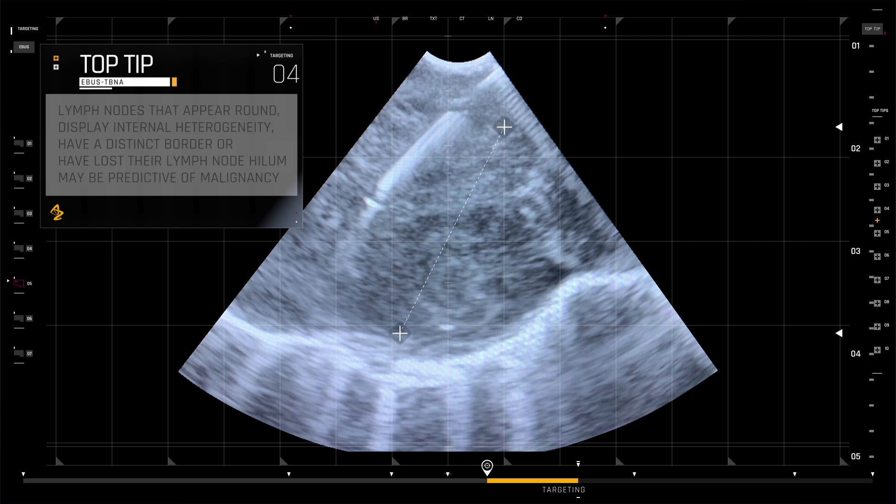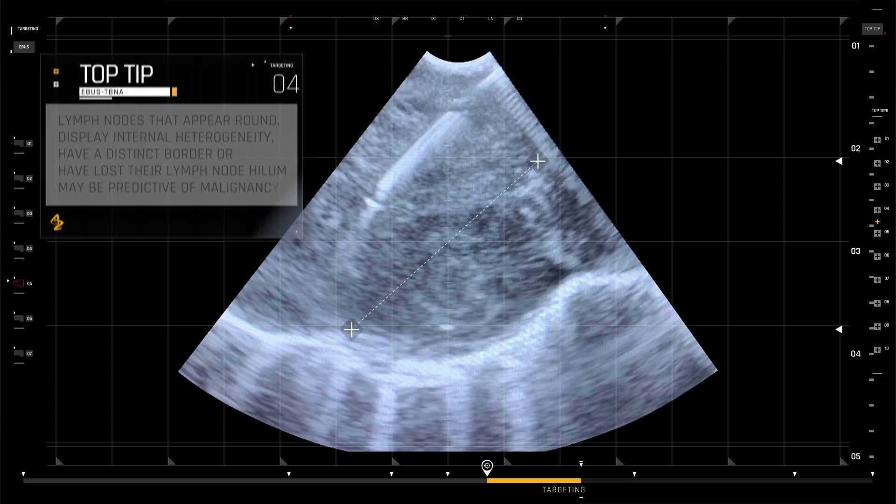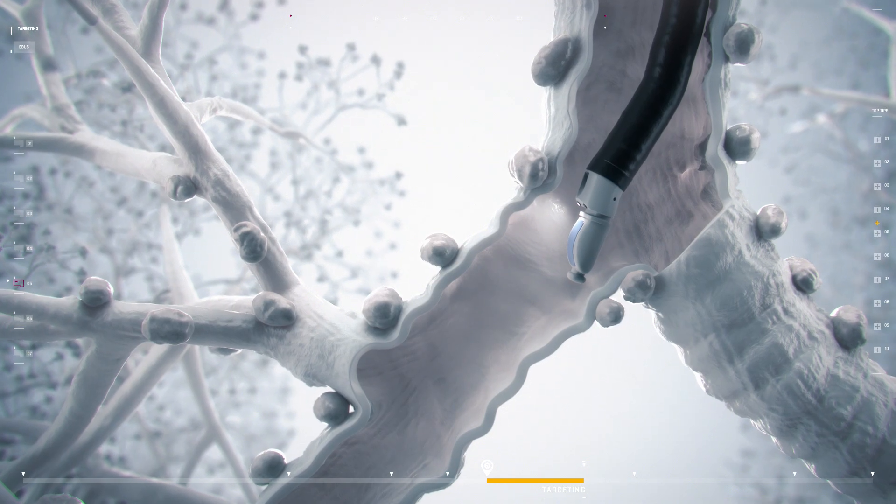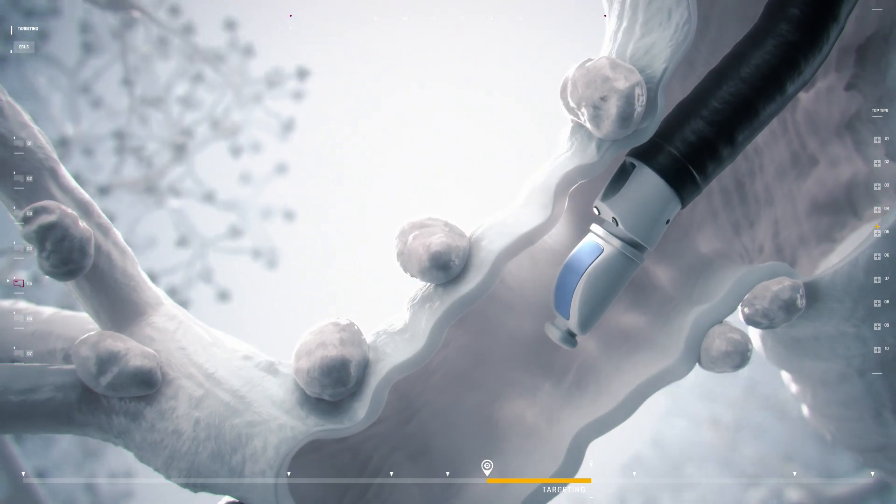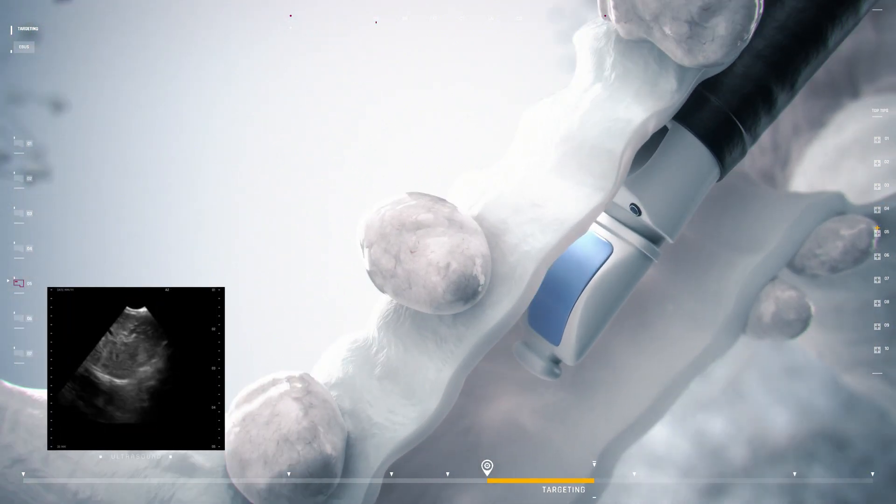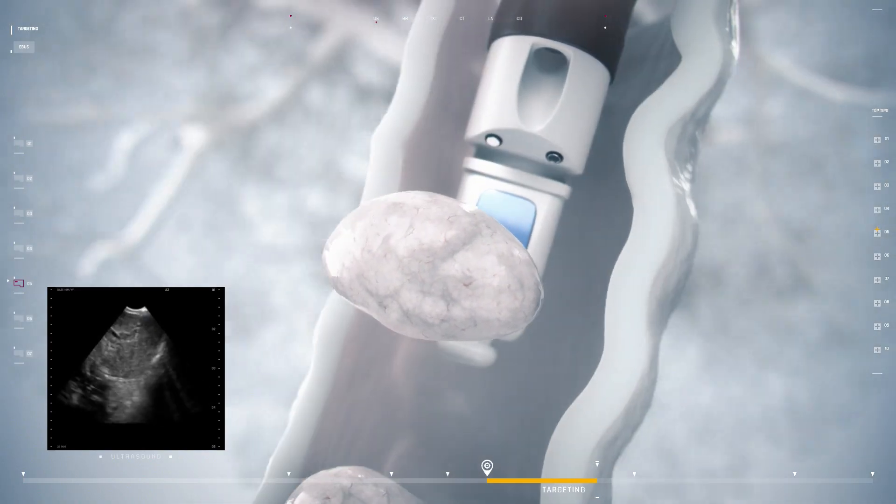To avoid unintentional puncture of vessels between the wall of the bronchi and the lesion, use the ultrasound scan to identify more echoic areas, which are likely to be lymph nodes rather than blood vessels.